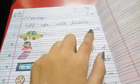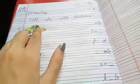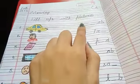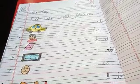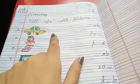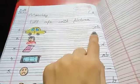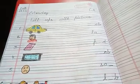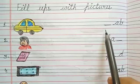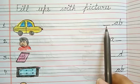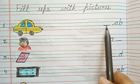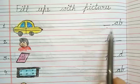And today we are going to do fill-ups with pictures. We have some pictures here, and we have to complete the spelling of these pictures in which a letter is missing.